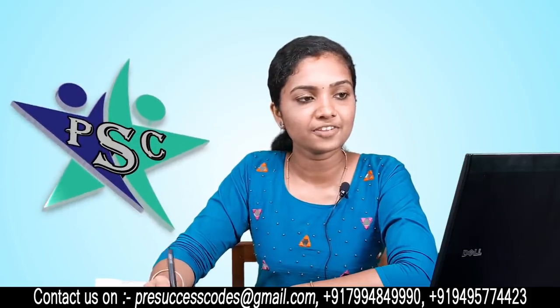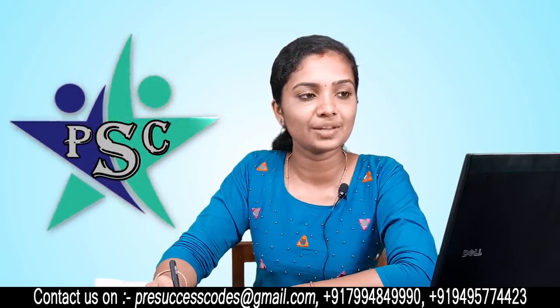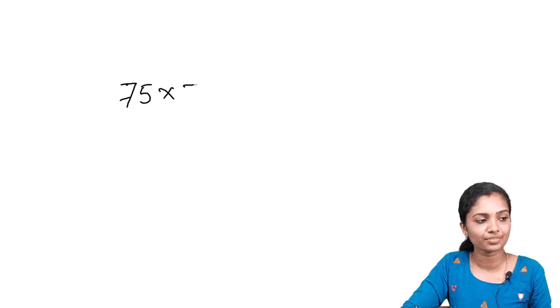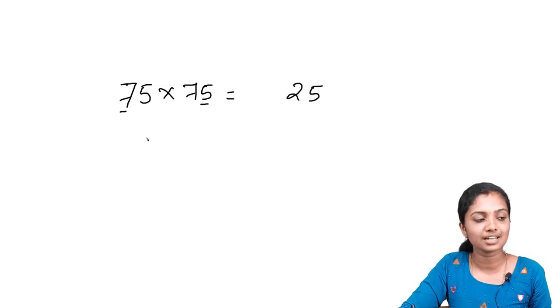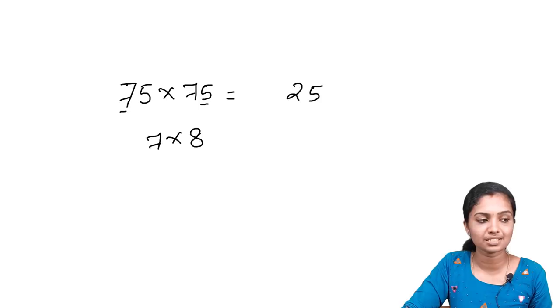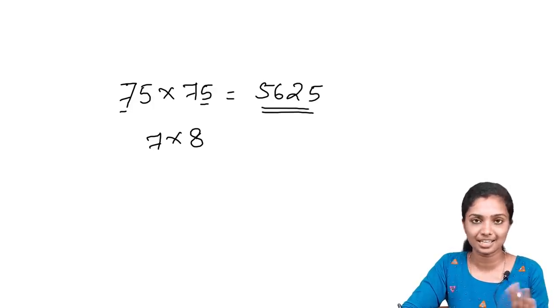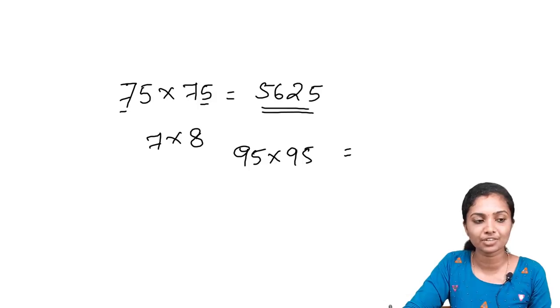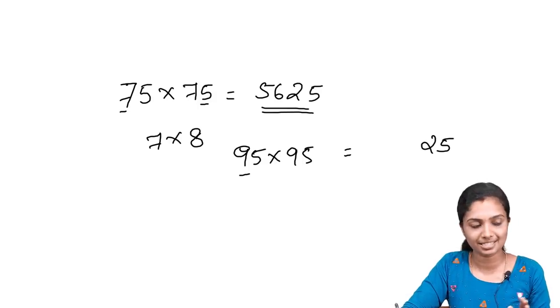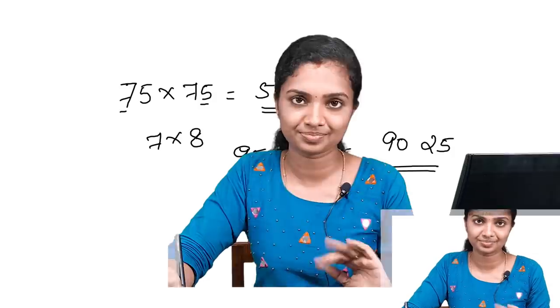Now let's see 75 squared. 75 into 75. So 5 into 5 is 25. The number before 5 is 7. The next counting digit is 8. 7 into 8 is 56. So 75 squared is 5625. How about 95 squared? 95 into 95. Last two digits is 25. The number before 5 is 9. 9 going to the next number is 10. So 9 into 10 is 90. Our answer is 9025.